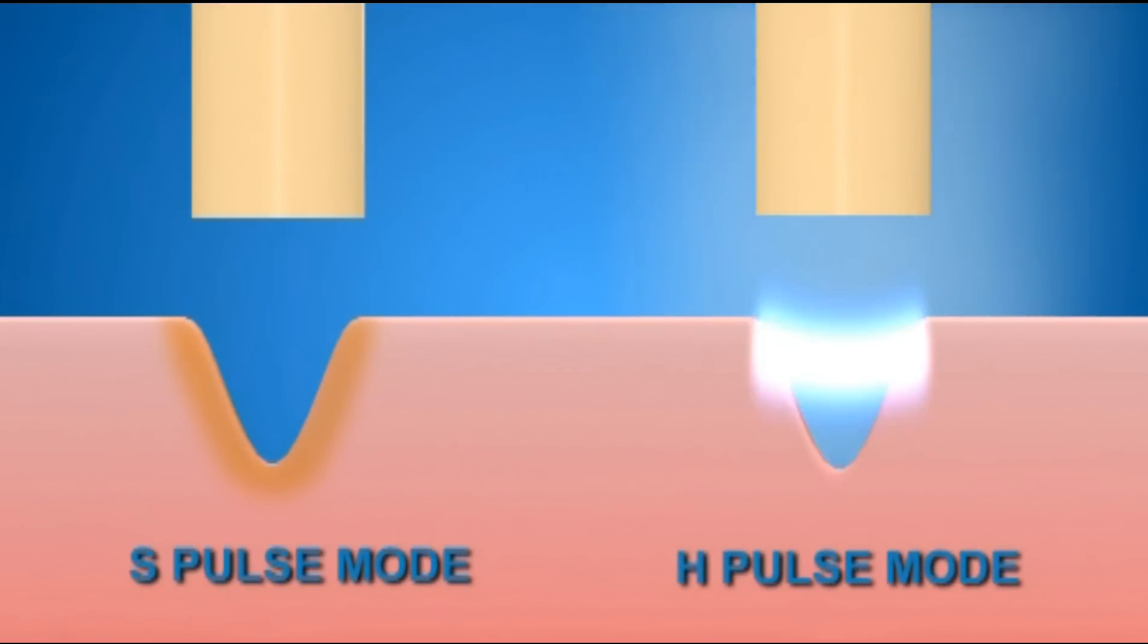Pulse mode has two settings: S, which coagulates deeper, and H, which cuts faster at the same power.